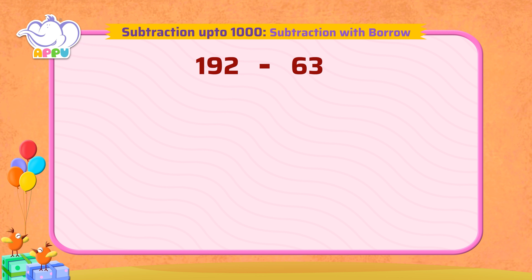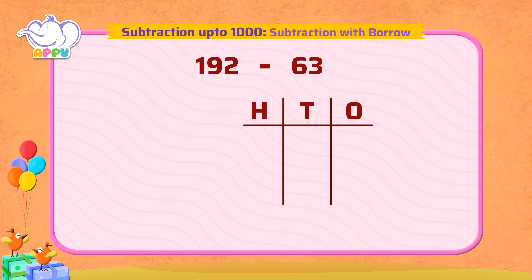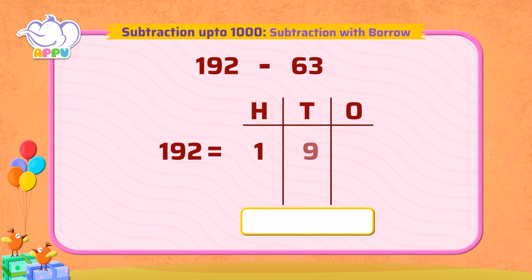We write 192 as hundreds, tens, and ones, which is one hundred, nine tens, and two ones. And 63 as zero hundreds, six tens, and three ones.